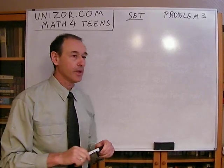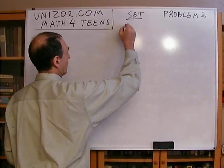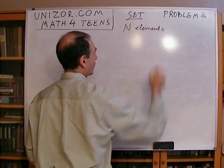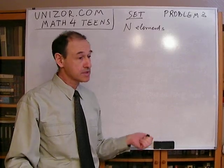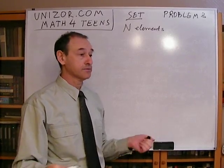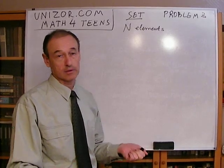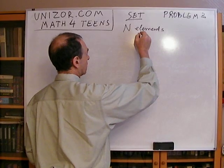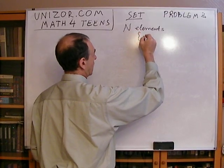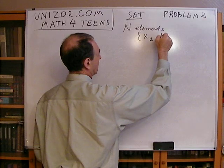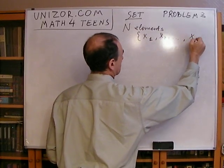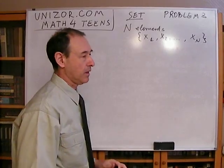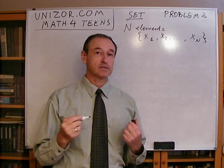Let's consider you have a set which contains n elements, and they're all different. As an example, you can have a set of the first n natural numbers from one to n, or anything else. We can denote these elements as x1, x2, etc., xn. These are my elements. Now, this set obviously contains subsets.